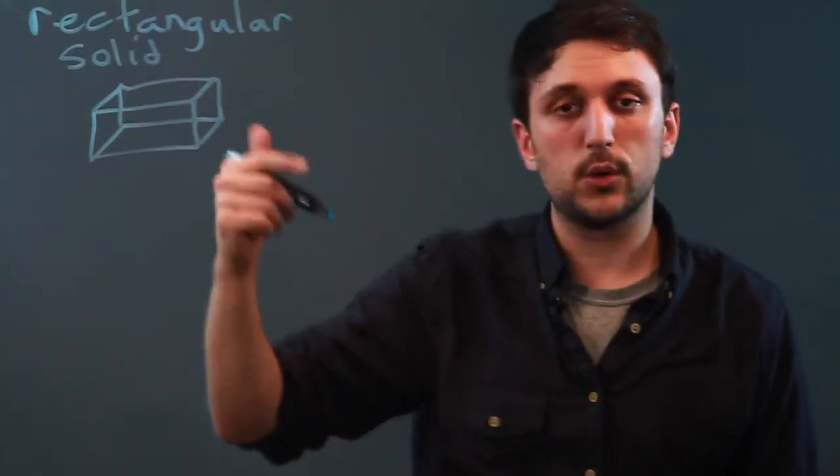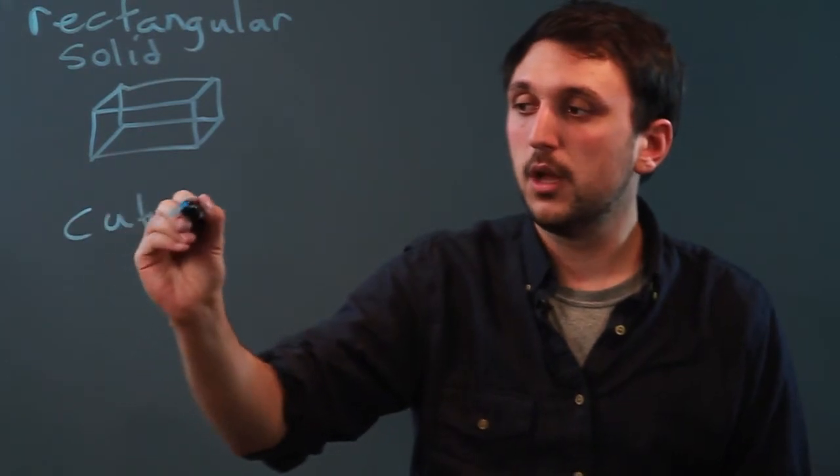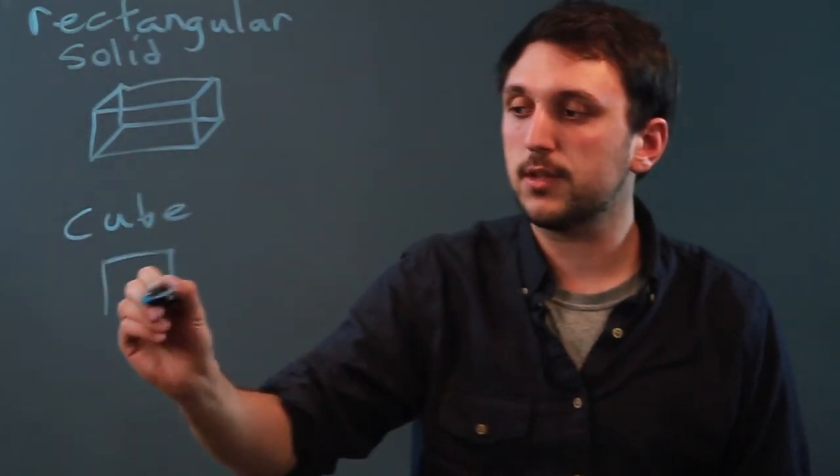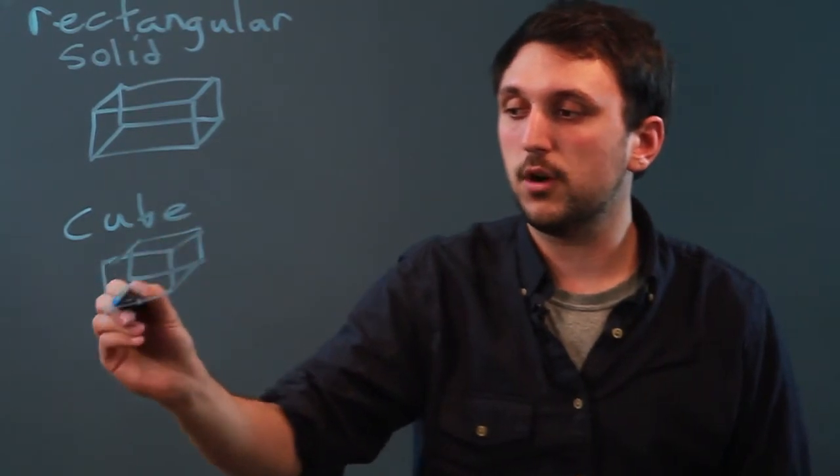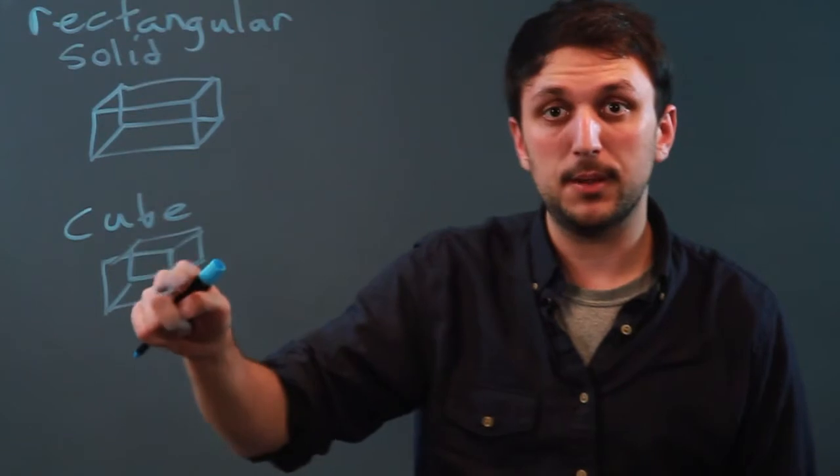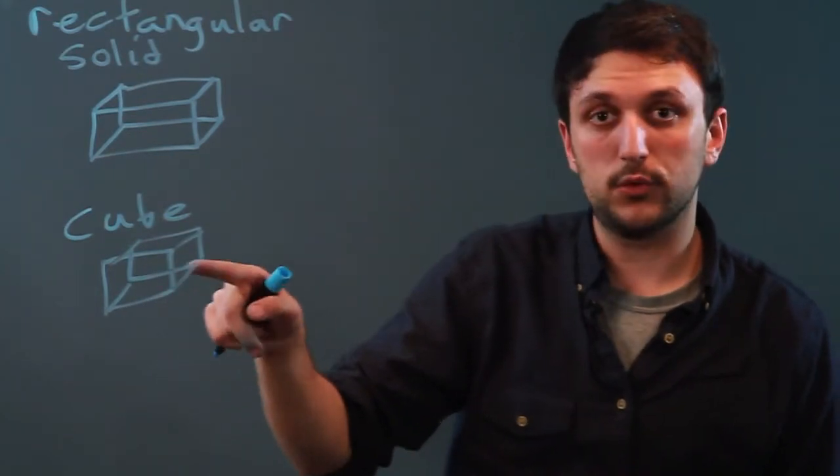A subcategory of a rectangular solid is a cube. Now a cube is a rectangular solid, and in this case, all of the faces are the same. So left, right, front, back, and top and bottom are all equal to each other.